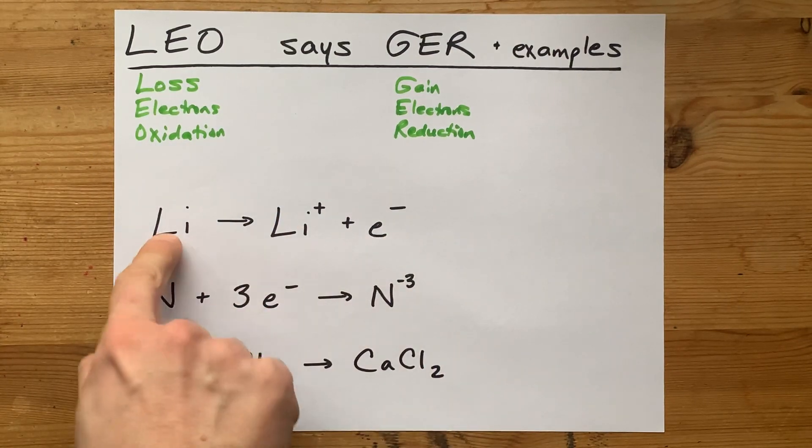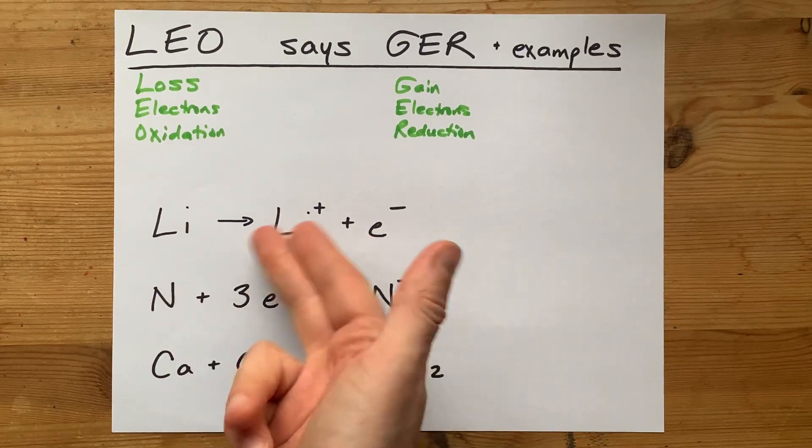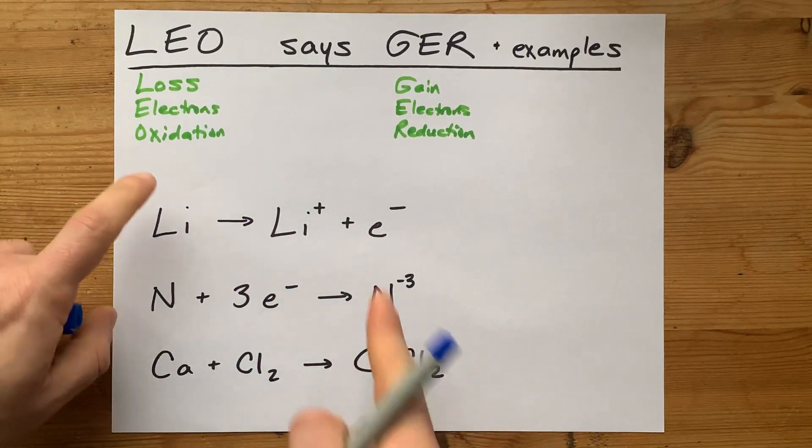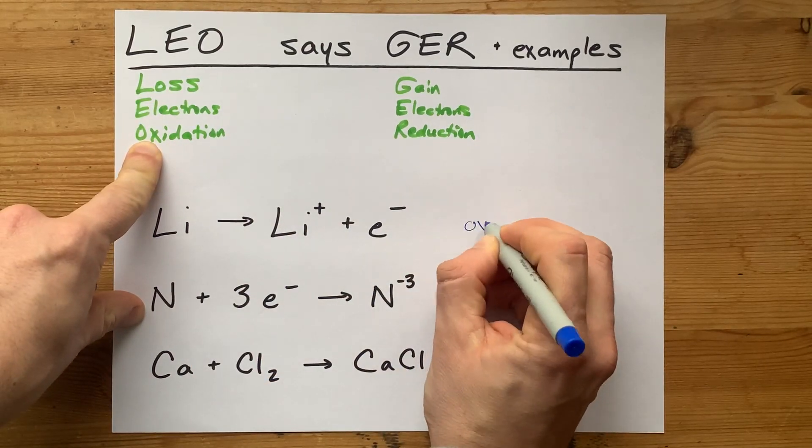Here, this lithium is clearly losing its electrons because the electron is no longer with the lithium. Oh, a loss of electrons. That must be an oxidation.